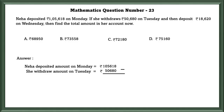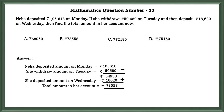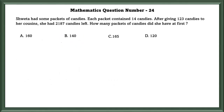Mathematics question number 23: Neha deposited 1,05,618 rupees on Monday. She withdrew 50,680 rupees on Tuesday, then deposited 18,620 rupees on Wednesday. From the total amount, we subtract the withdrawal and add the new deposit. The total in her account is 73,558 rupees, that is option B.